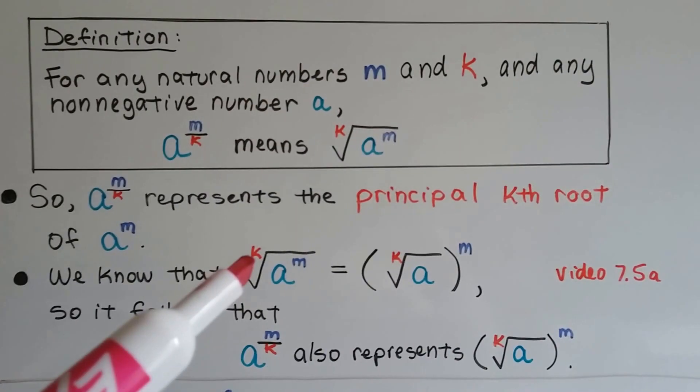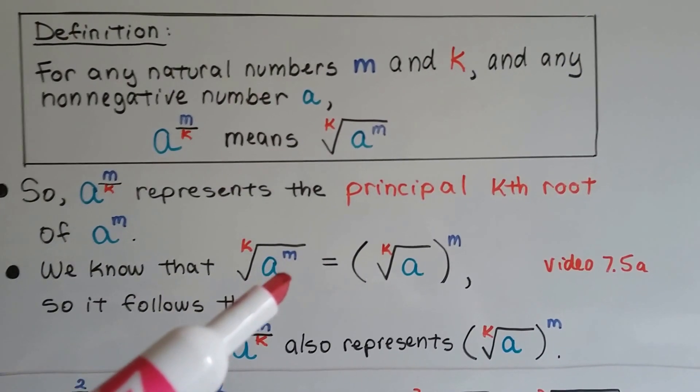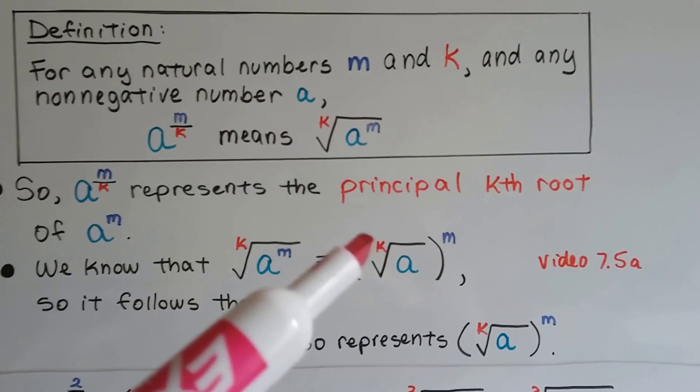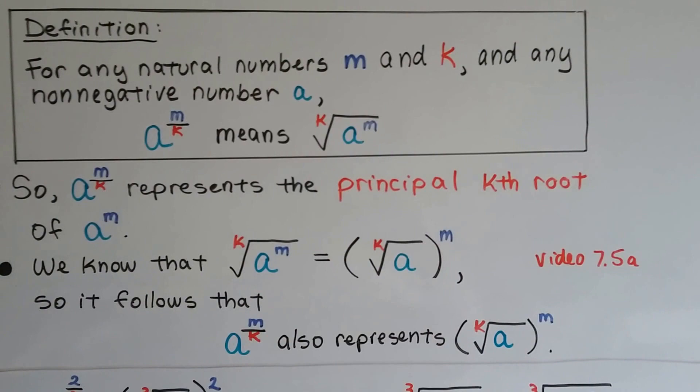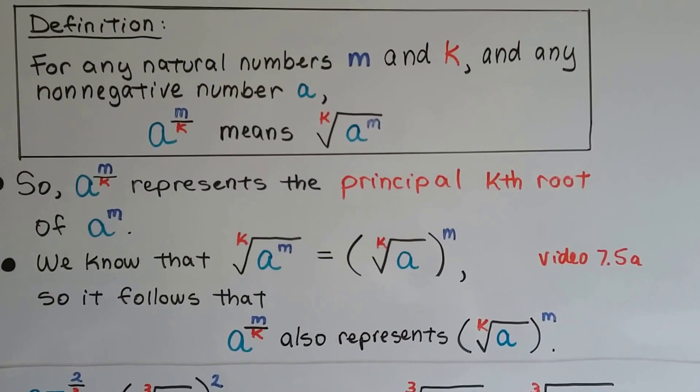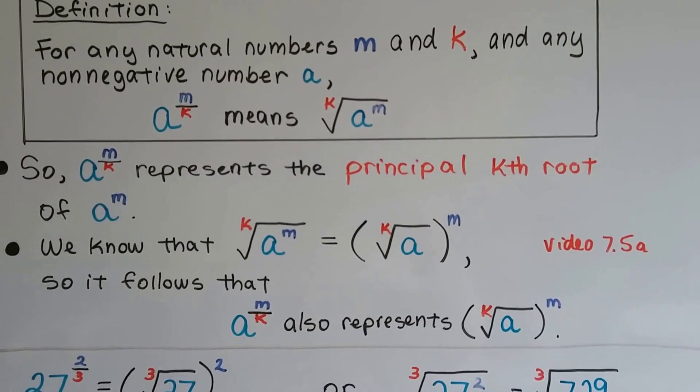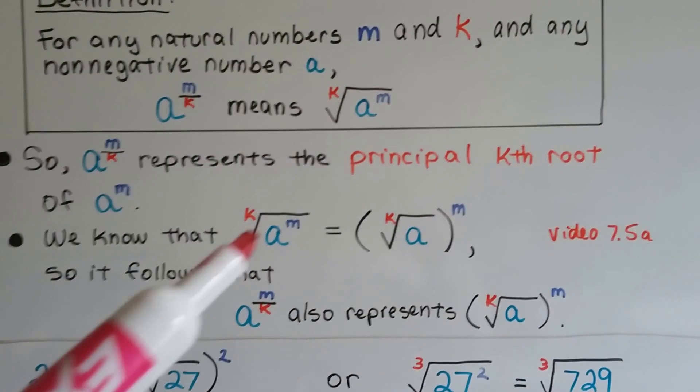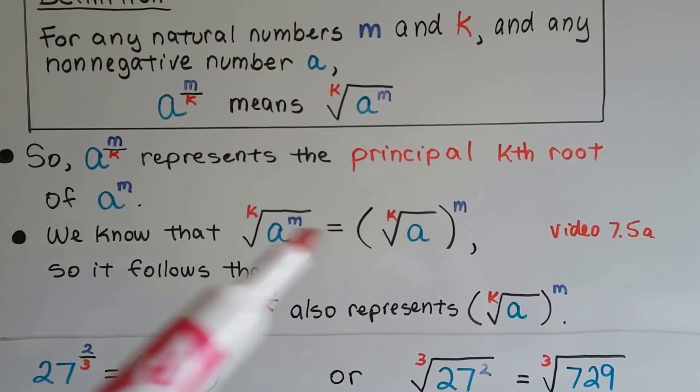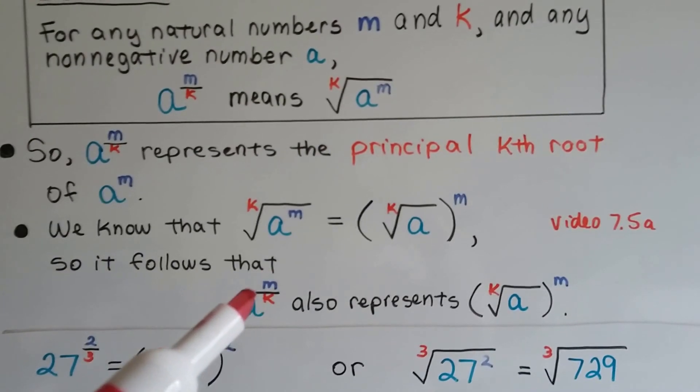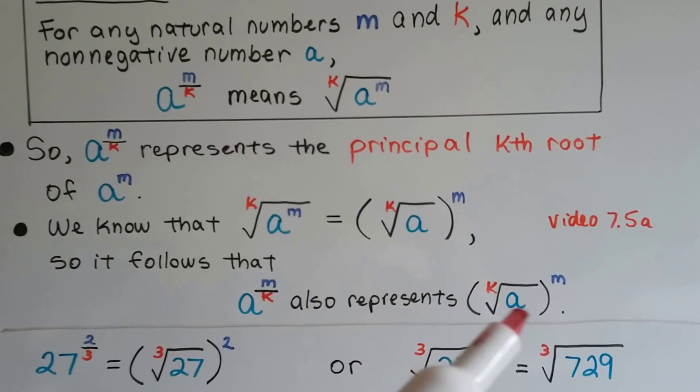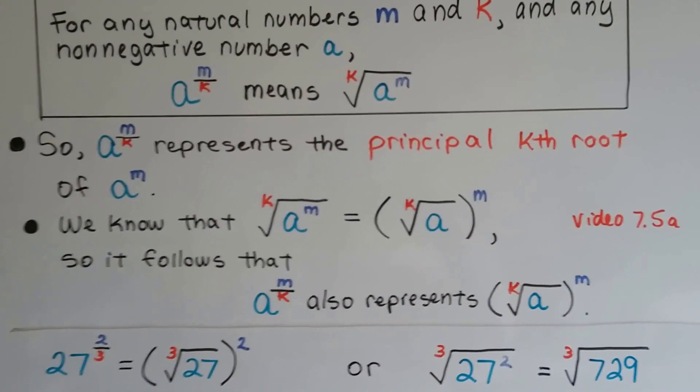We know that the kth root of a to the m power equals the same thing as the kth root of a inside parentheses to the m power. That was from our last video, 7.5a. So it follows that if we have a to the m over k, it also represents the kth root of a to the m.